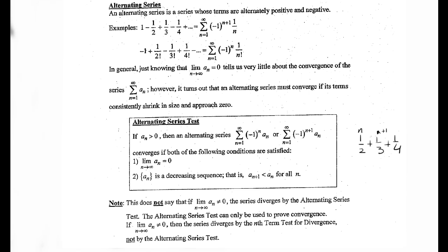Note: this does not say that if the limit as n approaches infinity of a sub n does not equal 0, the series diverges by the alternating series test. The alternating series test can only be used to prove convergence, not divergence. If the limit as n approaches infinity of a sub n does not equal 0, then the series diverges by the nth term test for divergence — not by the alternating series test.